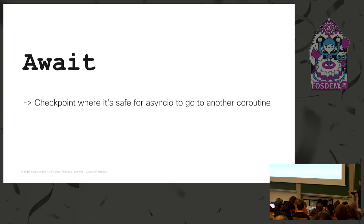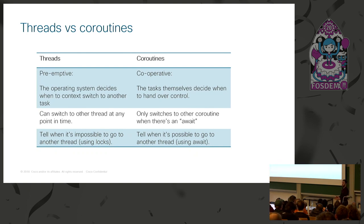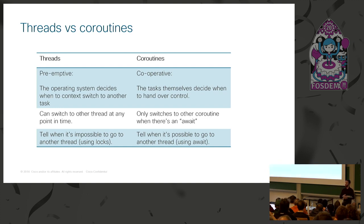You go back and forth between all these coroutines at the points where you have an await, so you have total control over context switching. The key difference between threads and coroutines is that threads are preemptive — the operating system decides when to context switch — whereas with coroutines in asyncIO, we're in control. That means most of the time we don't need locks, because we know which pieces of code are atomic and won't be interrupted — those are the places without an await.